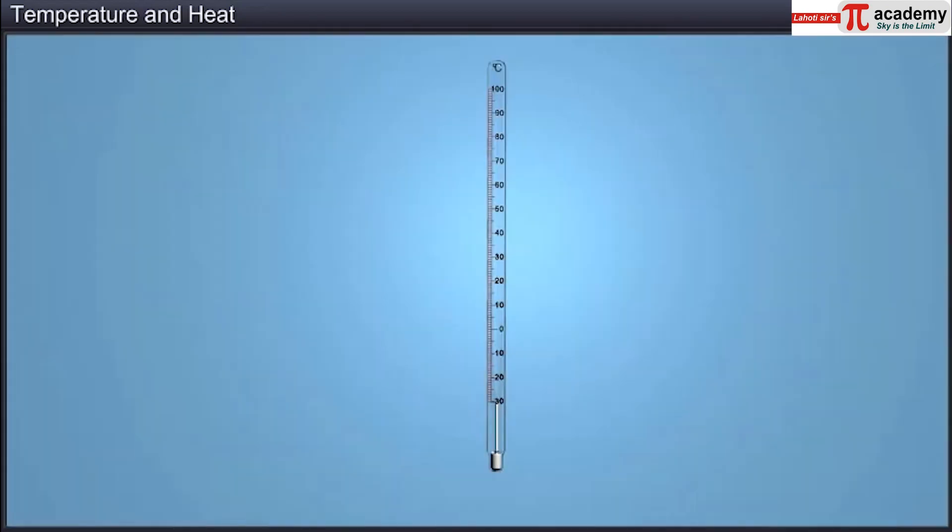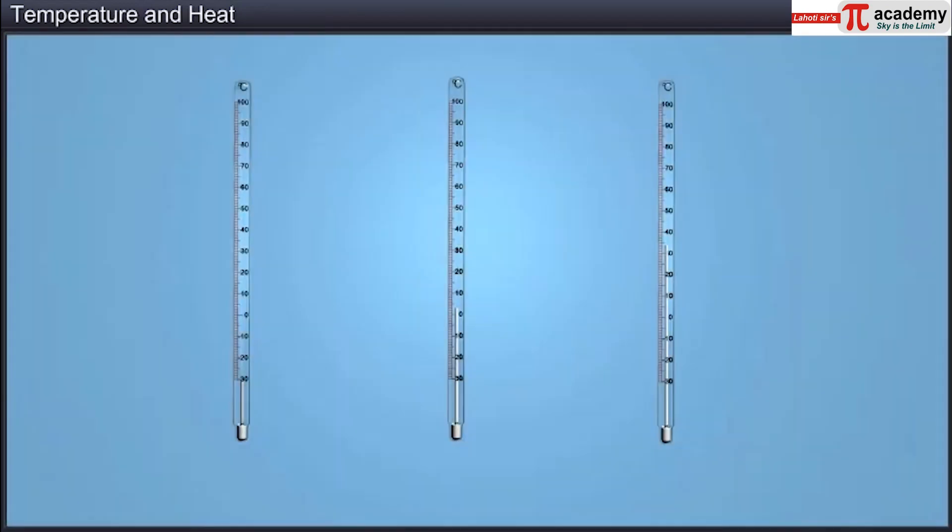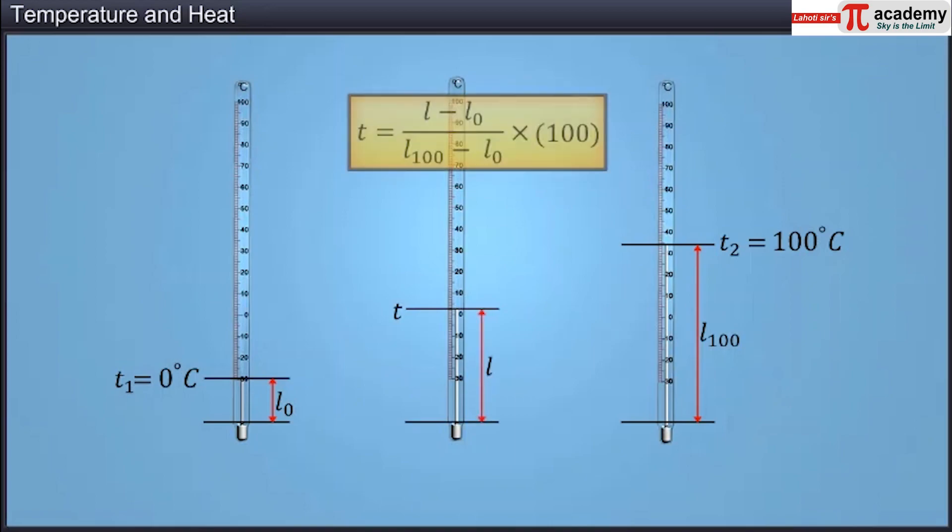For a Celsius mercury thermometer, if the lengths of the mercury columns are L0 and L100 corresponding to two reference temperatures, T1 is equal to 0 degrees Celsius and T2 is equal to 100 degrees Celsius, then the temperature T corresponding to a length of L is T equals L minus L0 by L100 minus L0 into 100.